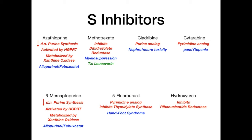This exam scenario will likely present as a patient with cancer on azathioprine or 6-mercaptopurine who also gets allopurinol — perhaps described with arthralgias — and you'll need to identify the drug interaction mechanism. It's tricky because the question might seem to be about oncology but then reference a gout drug. Understanding xanthine oxidase metabolism is the key to tying it together on test day.